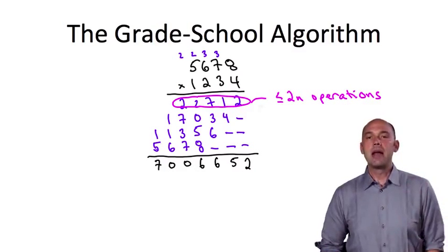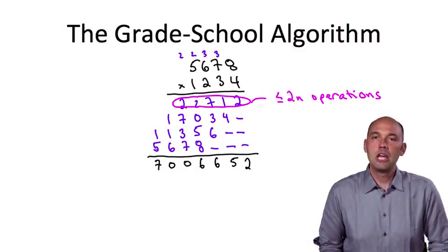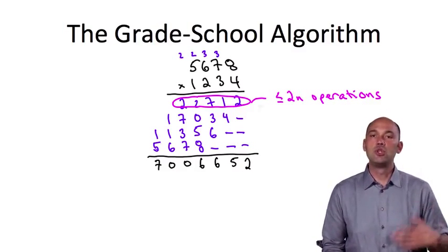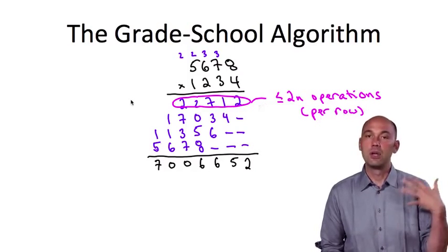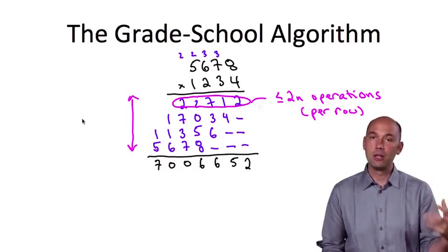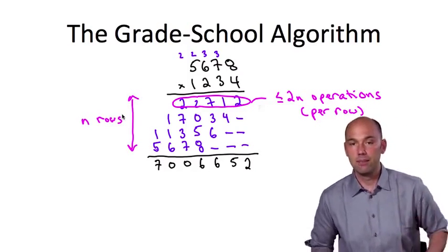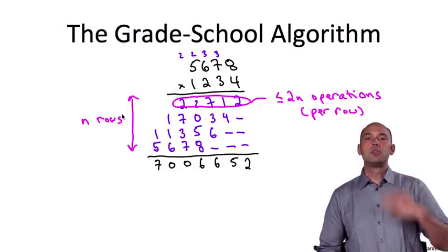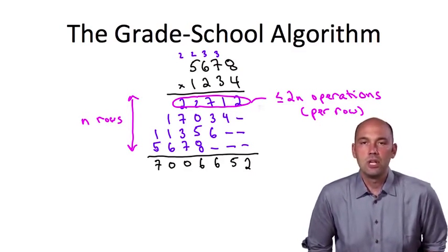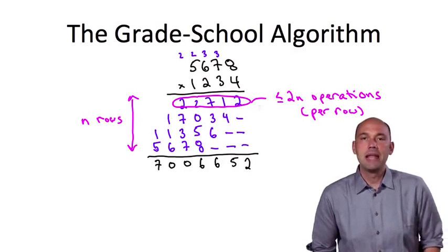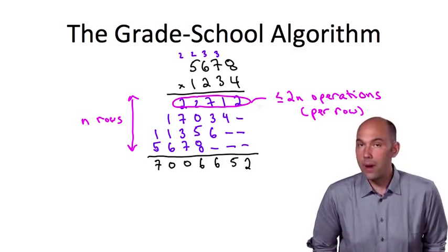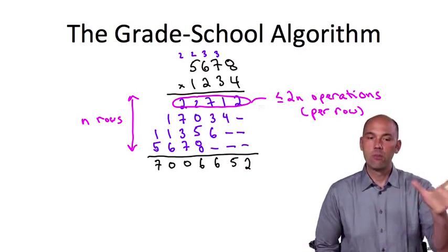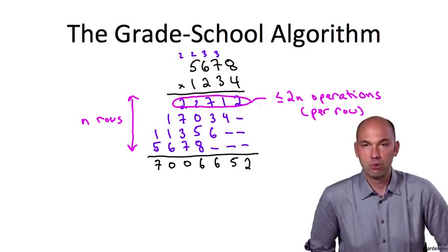And there's nothing special about the first partial product. The same argument says that we need at most 2n operations to form each of the partial products, of which there are n, one for each digit of the second number. If we need at most 2n operations to compute each partial product and we have n partial products, that's a total of at most 2n squared operations to form all of the partial products.